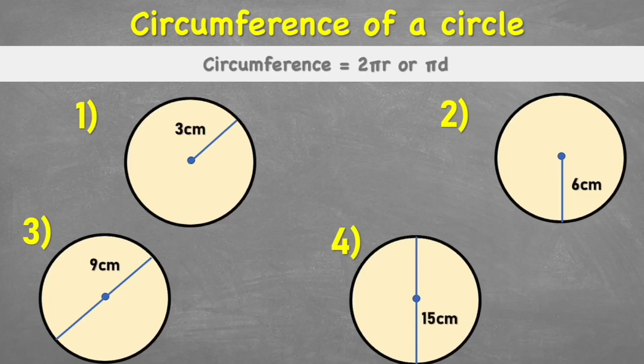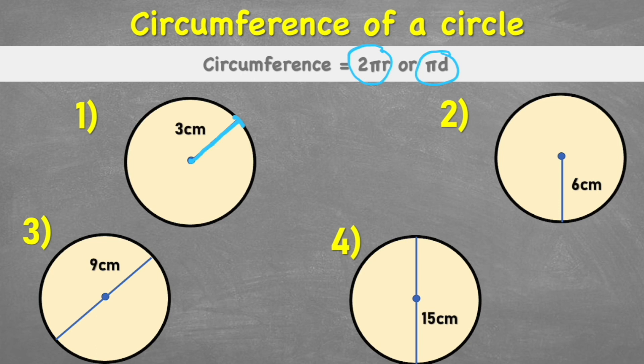First, let's look at our formula for calculating the circumference of a circle. We have two formulas: 2πr and πd. Let's see why we need both and what they mean. In the first example, we're given the radius — the measurement from the center of the circle to the outside where it joins the circumference. So if we're given the radius, we use 2πr.